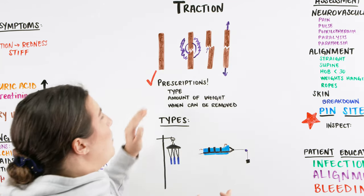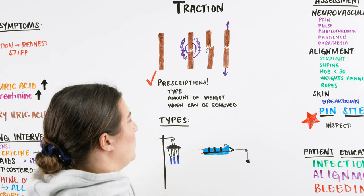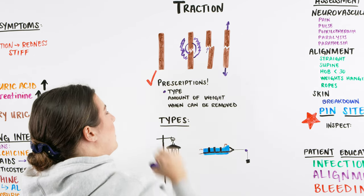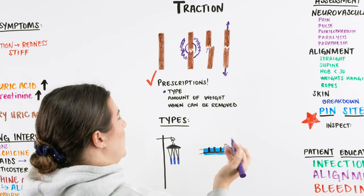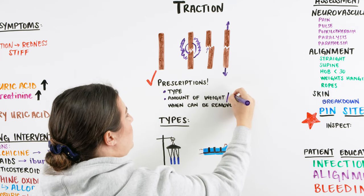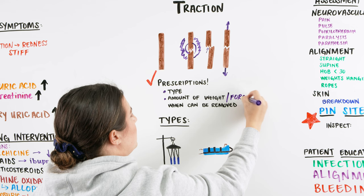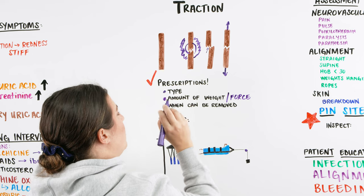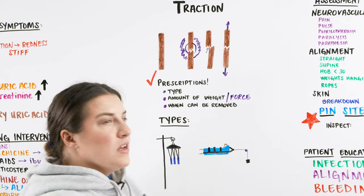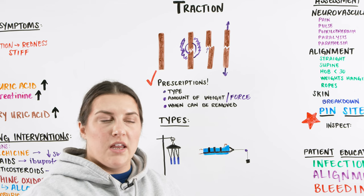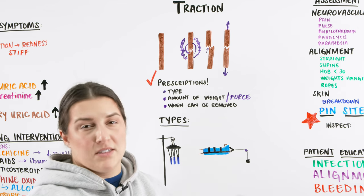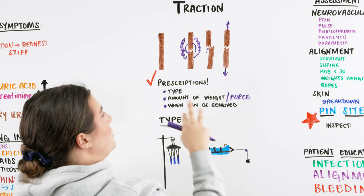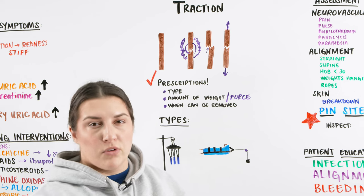When we have traction, one of the big things we want to look for is the prescription the doctor ordered. This includes the type of traction needed, the amount of weight or force required, and when it can be removed — whether that's when the patient wants to roll over, during a bed bath, or if it has to stay on the entire time. The whole purpose is to get realignment, hopefully reset the bone, and possibly prepare for surgery.